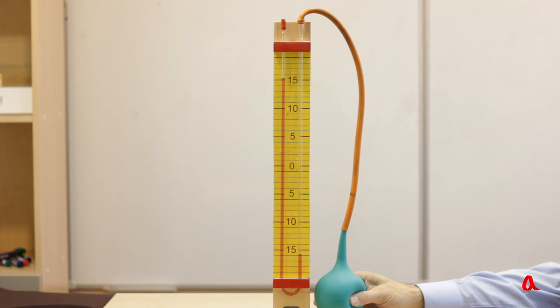Thus, the air pressure inside the bulb is higher than the atmospheric one by 30 cm of the water column. 10 m of water column create a 1 atm pressure, and 10 cm will create a 0.01 atm pressure. And 30 cm of water column will correspond to 0.03 atm pressure.